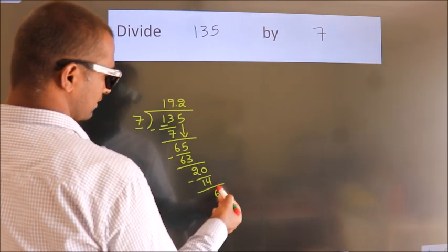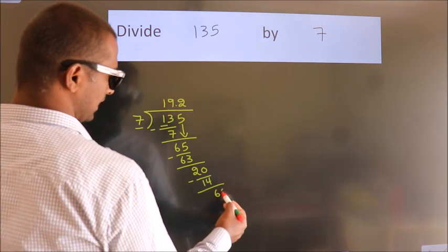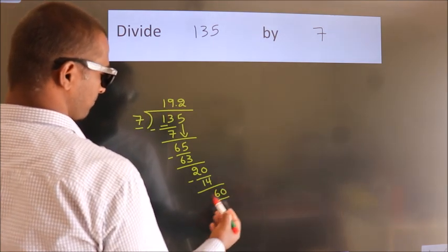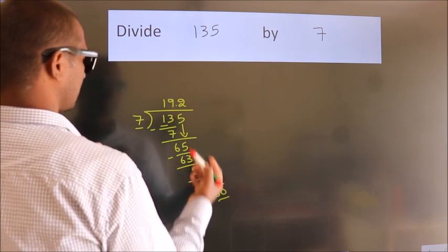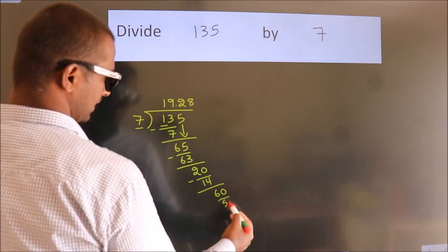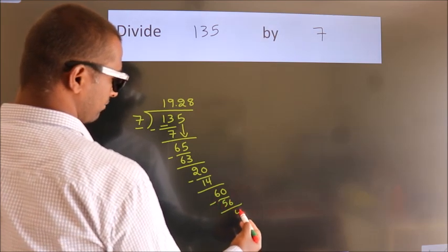After this, we already have the decimal, so directly take 0. So 60. A number close to 60 in the 7 table is 7 times 8 is 56. Now we subtract. We get 4.